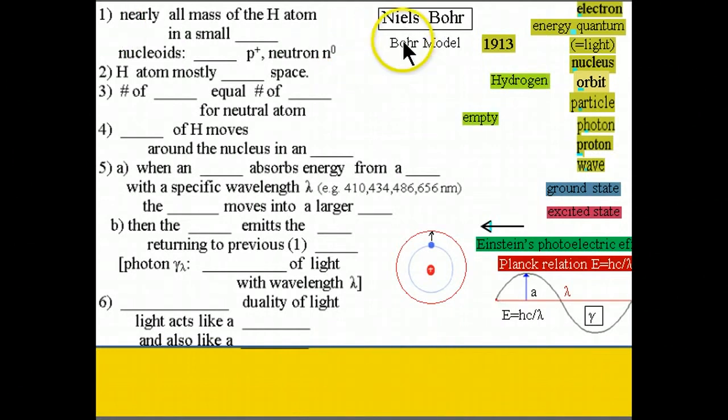The Bohr model was published first by Niels Bohr in 1913 and it is based essentially on the discovery of Ernest Rutherford. The first four items are exactly the same.